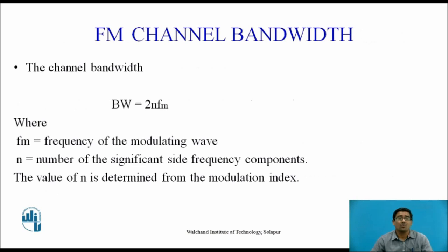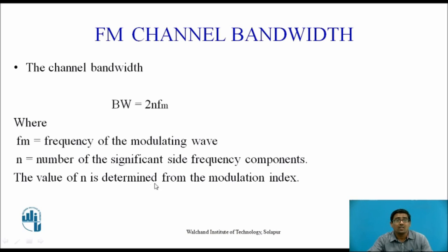The main important topic now is FM channel bandwidth — frequency modulation channel bandwidth. The channel bandwidth required for frequency modulation is given by the formula: Bandwidth = 2 × n × FM, where FM is the frequency of the modulating wave, n is the number of significant side frequency components, and the value of n is determined from the modulation index.